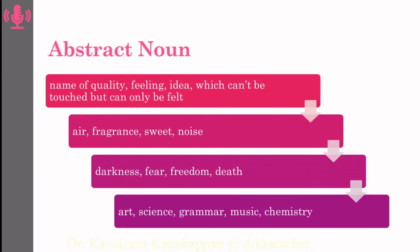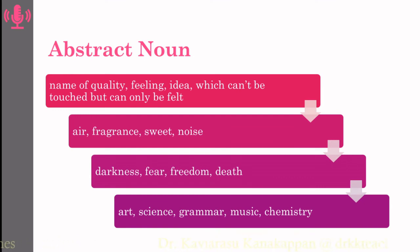Abstract noun is a name of quality, feeling, idea, which can't be seen, but can only be felt. For example, air, fragrance, sweet, noise — these can never be seen, they can only be felt. And likewise, darkness, fear, freedom, death — these are the qualities which you can sense. Art, science, grammar, music, chemistry — these are the ideas which you can feel only. You can never see them. These are abstracts which can never be visible to our common eyes.